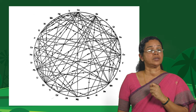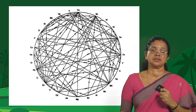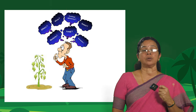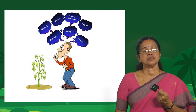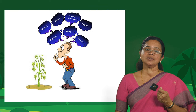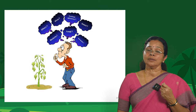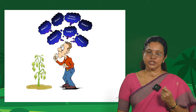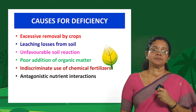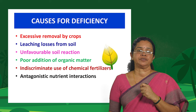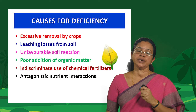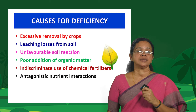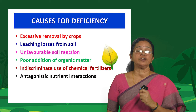This is what the farmer usually faces: suddenly the crop wilts, and he wonders why. It can be due to diseases, insect pests, moisture stress, or finally a nutritional disorder — either a deficiency or a toxicity. Now, what are the causes of these deficiencies? Every deficiency has a cause. The first and foremost is excessive removal by crops. For example, maize is considered an exhaustive crop — it requires and removes large amounts of nutrients from the soil.